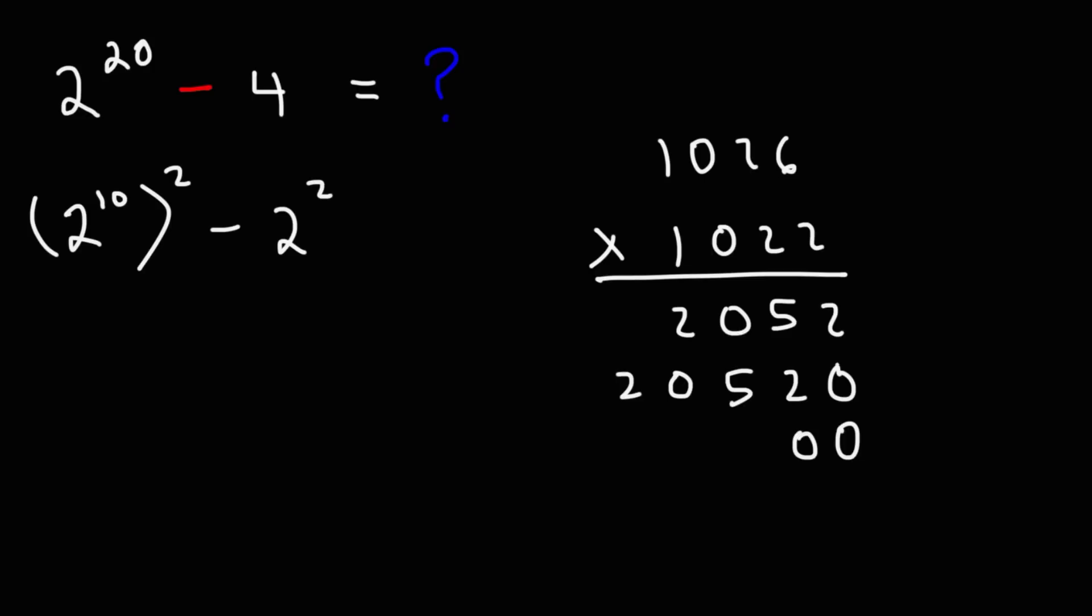2 times 6 is 12, carry the 1. 2 times 2 is 4 plus 1 is 5. 0 is 0 and then 2 times 1 is 2. For the third row we're going to add two zeros and move on to the next digit. 0 times 6 is 0, 0 times 2 will be 0, 0 times 0 is 0, 0 times 1 is 0. Now for the last row we're going to add three zeros and start with the next digit. 1 times 6 is 6, 1 times 2 is 2, 1 times 0 is 0, and 1 times 1 is 1. So now let's add each column of numbers. For the first column we have 2, then 5 plus 2 is 7. Next one is 5. 2 plus 6 is 8. 2 plus 2 is 4.